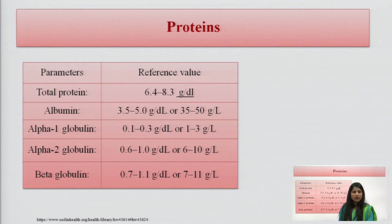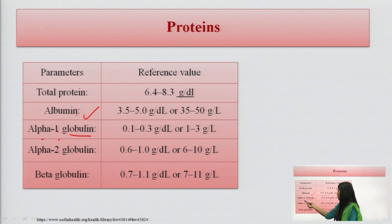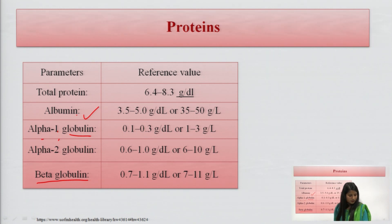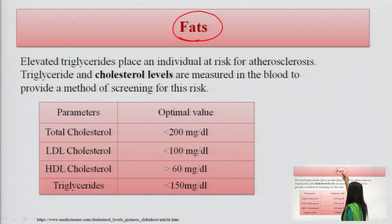Reference values are mentioned for albumin — including alpha-1 and alpha-2 albumins — and for globulins including alpha-1, alpha-2, and beta globulin. If these values change, the patient may be suffering from any of the conditions mentioned.